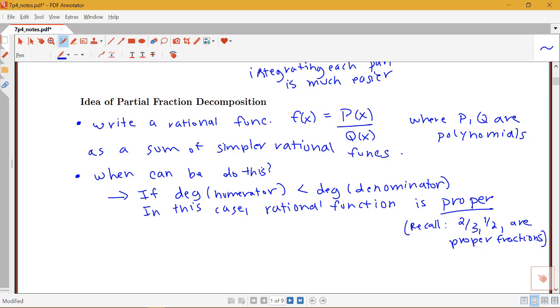We're just extending this idea to polynomials. A proper rational function will have the polynomial on the top have a lower degree highest power of x than the denominator on the bottom.